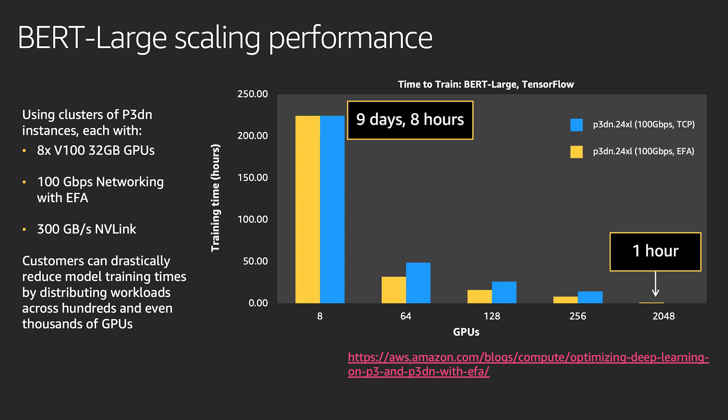These are also ideal for large-scale distributed processing, as multiple nodes can be clustered together and leverage the 100 gigabits of networking throughput and the AWS custom elastic fabric adapter for low latency internode communication.